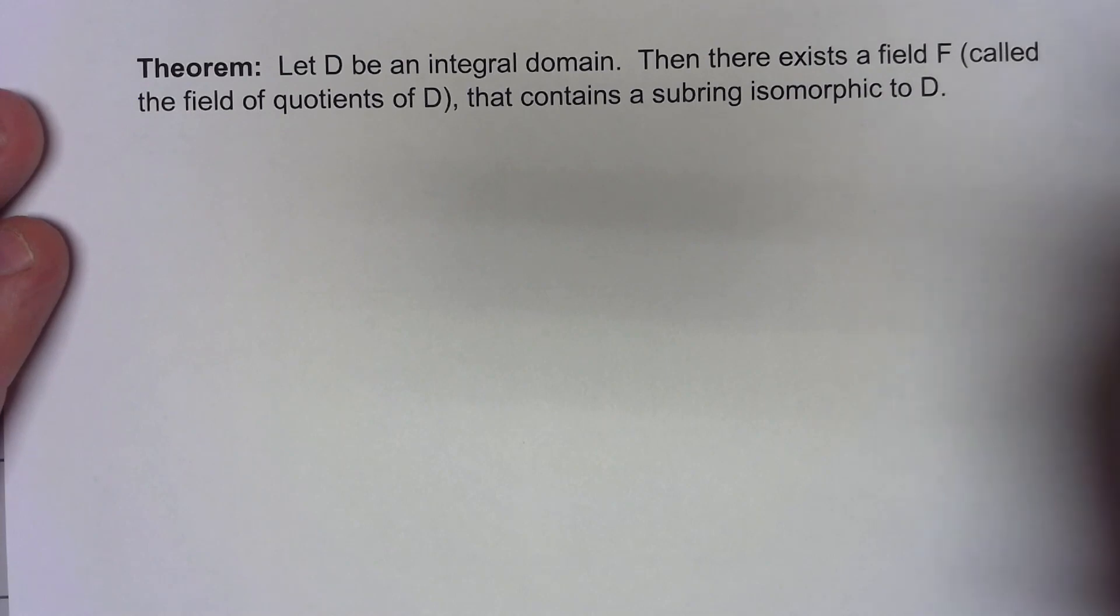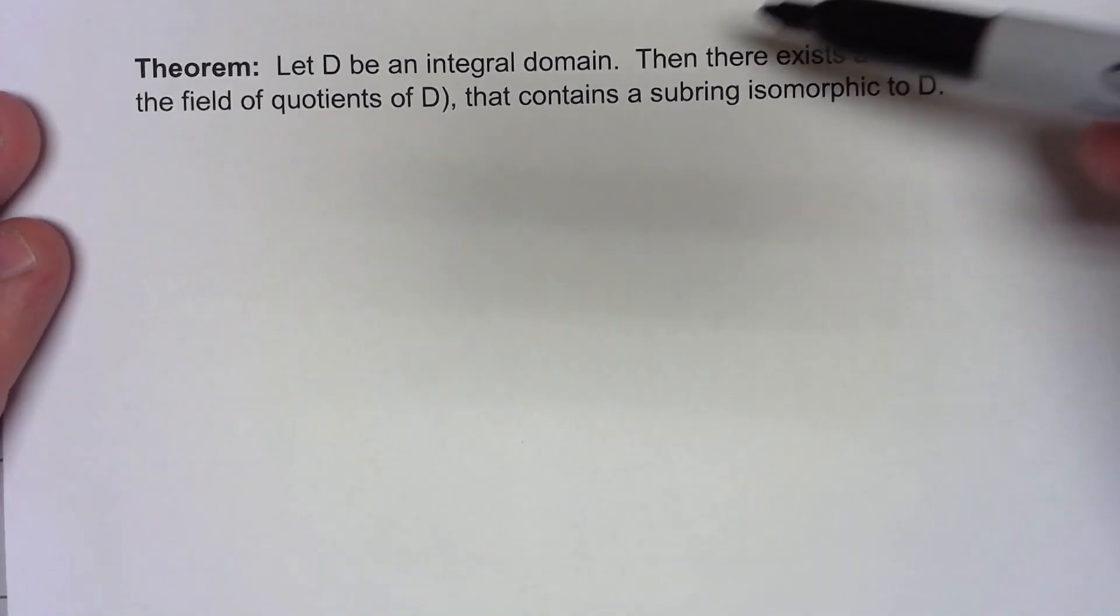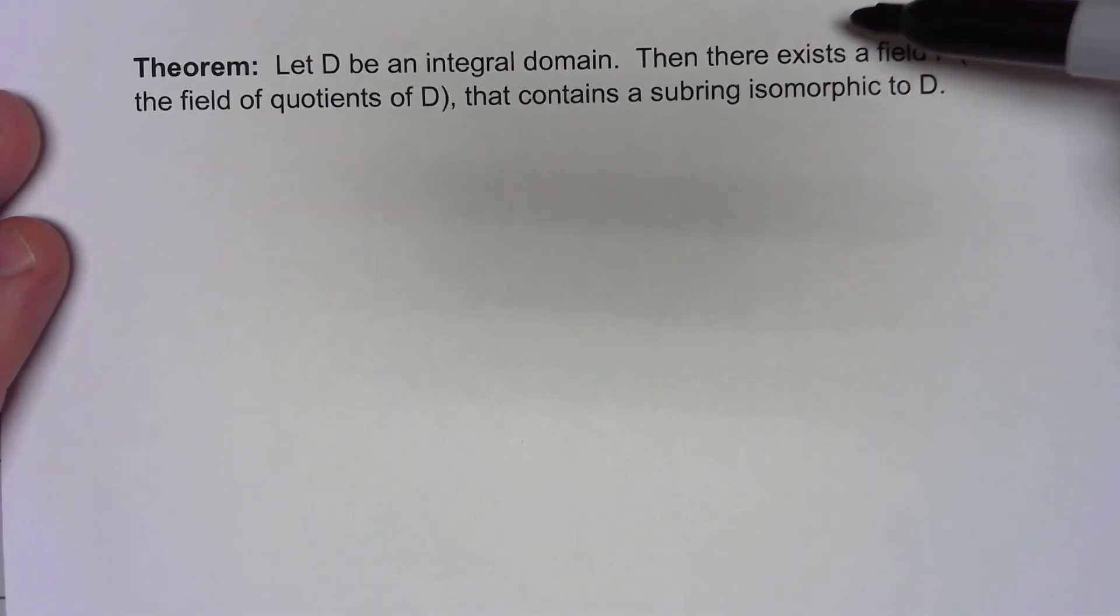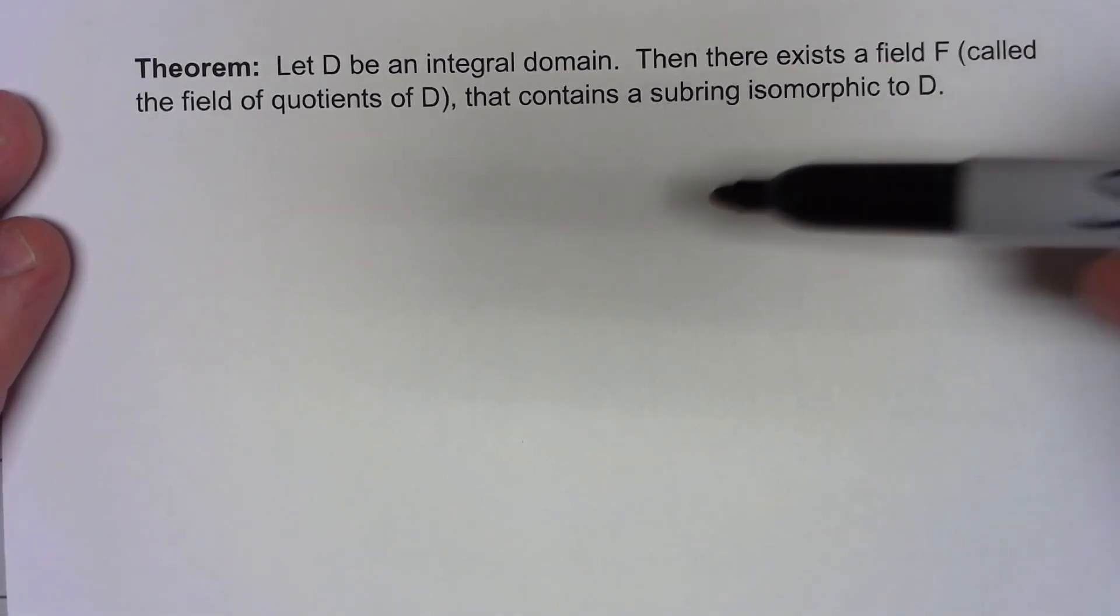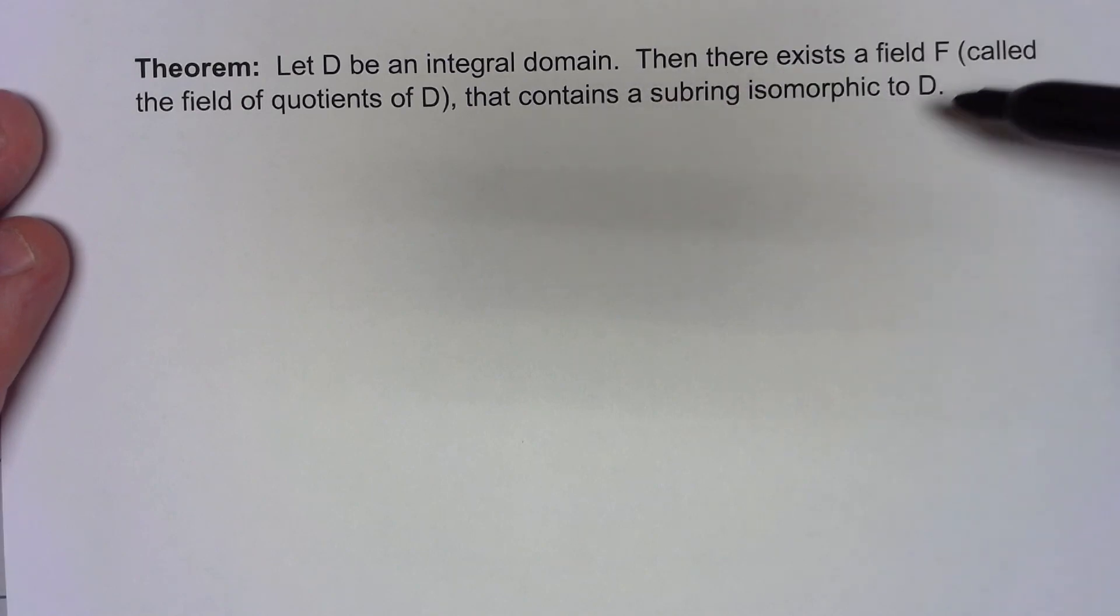There's a really important construct we can do if we start with an integral domain. We can create a field, which we'll call the field of quotients of that integral domain, that contains a subring that's isomorphic to that integral domain.